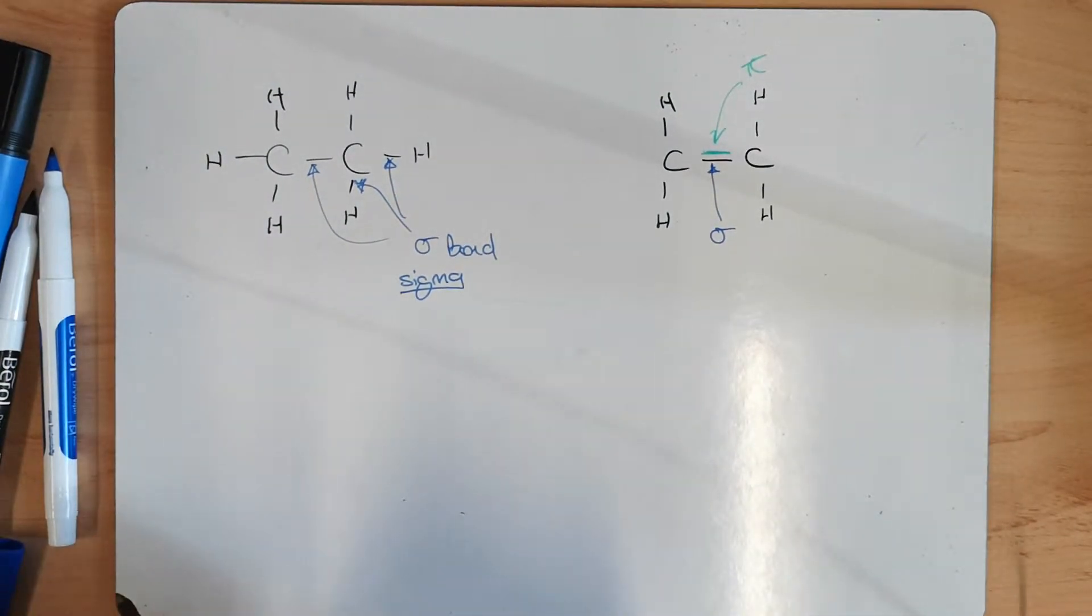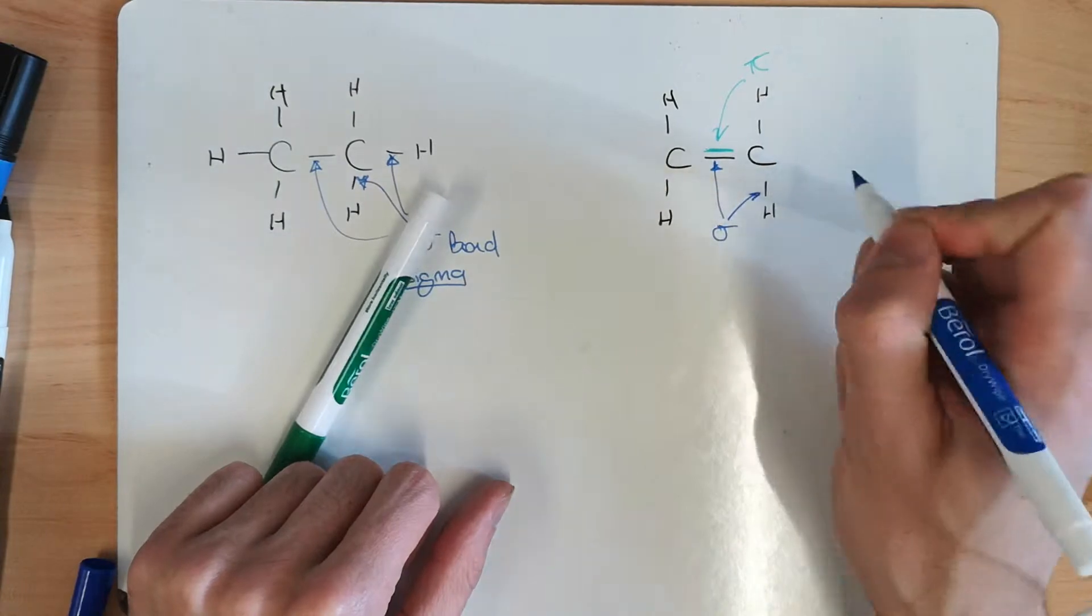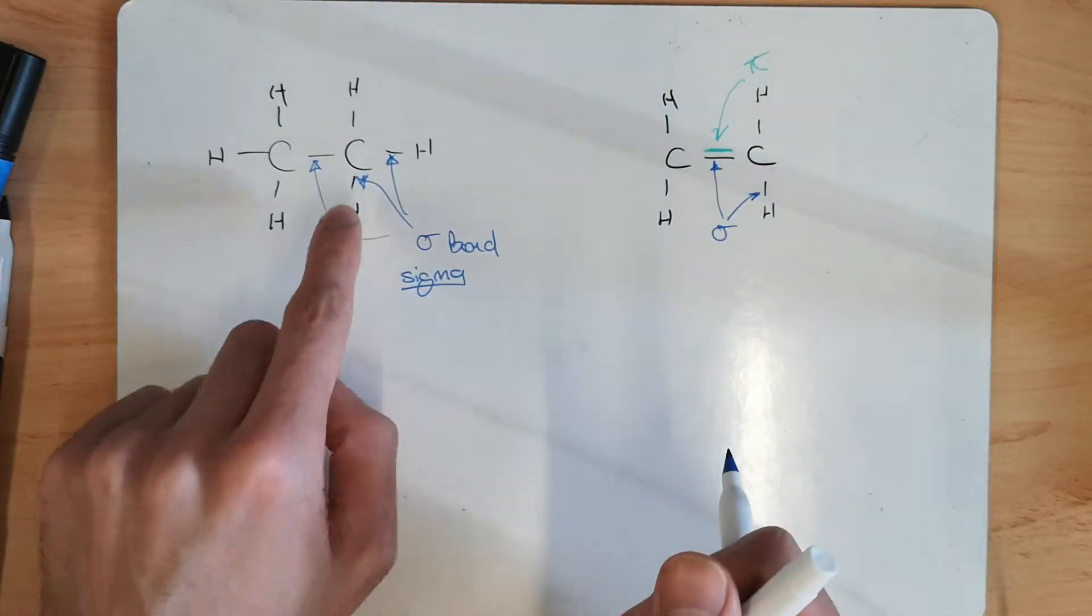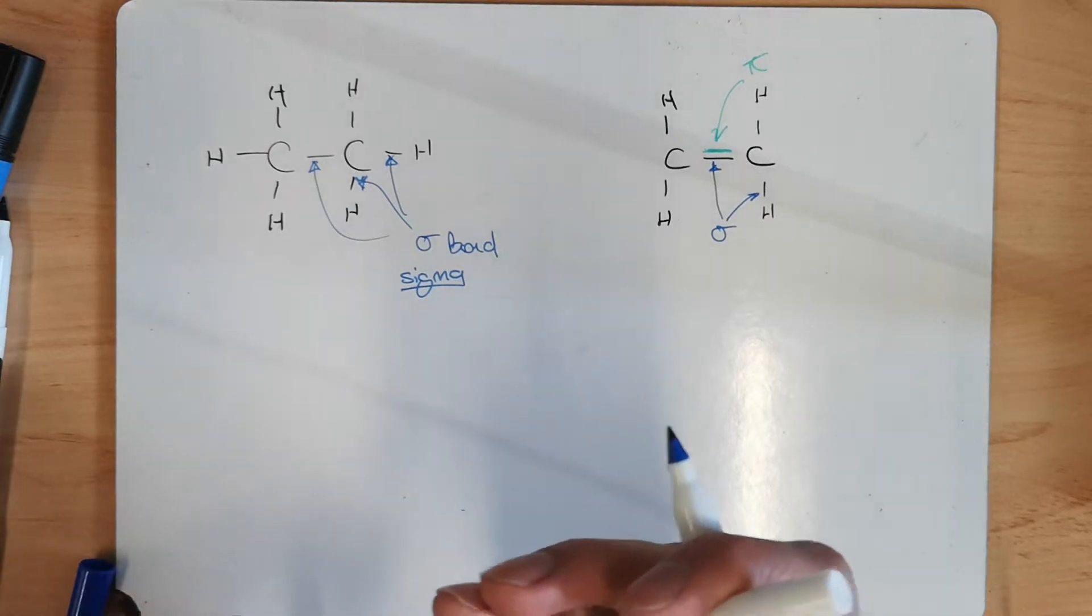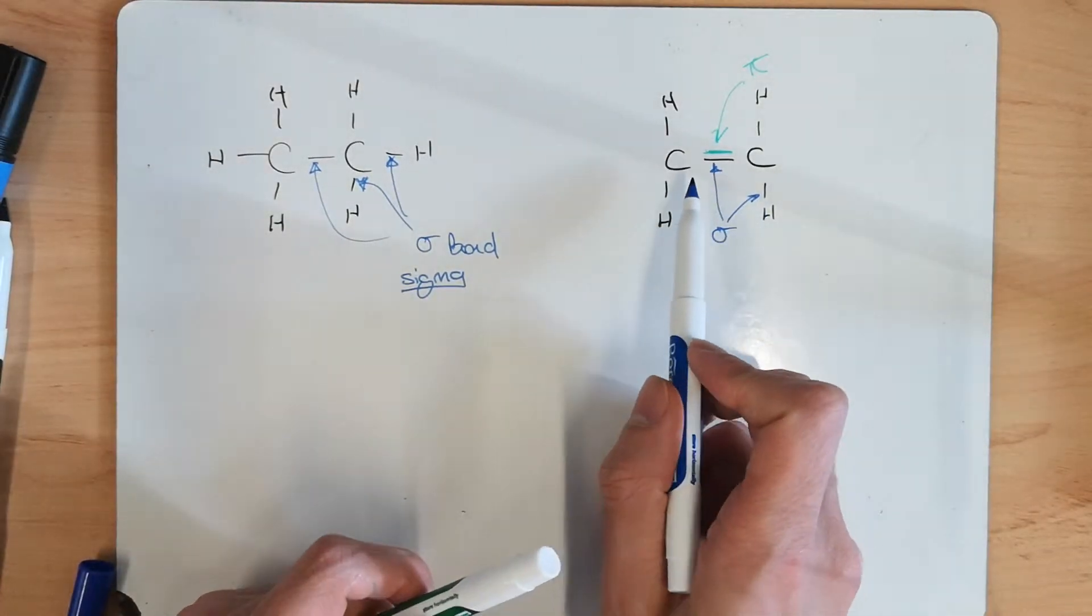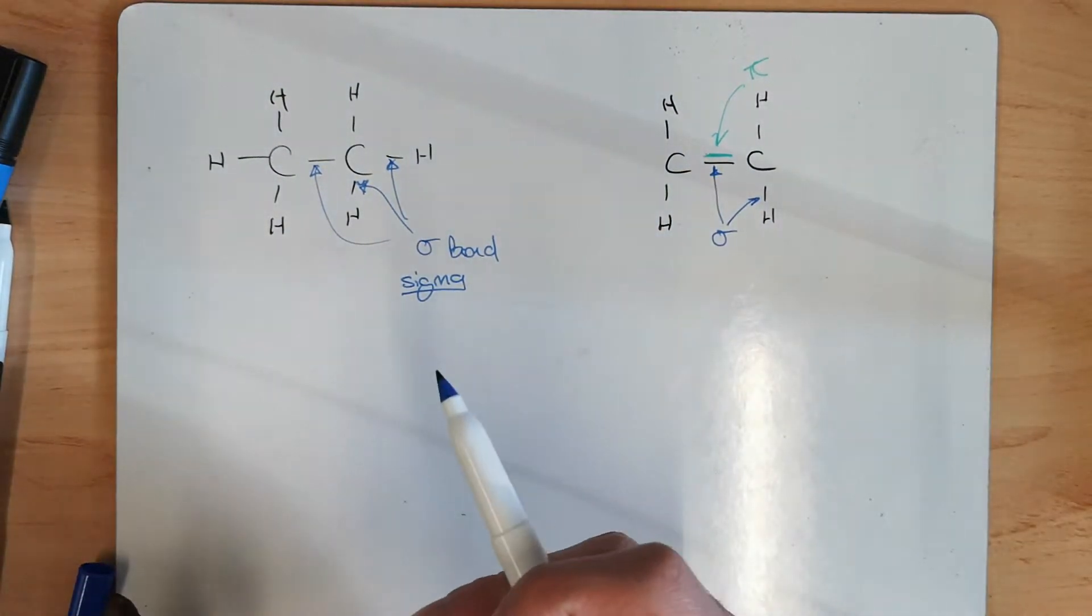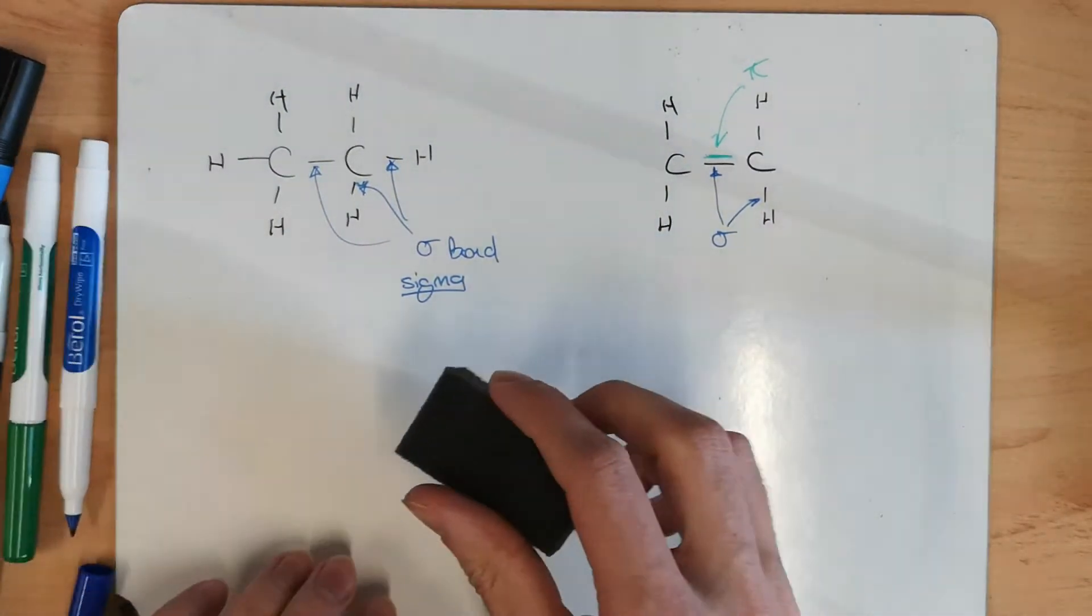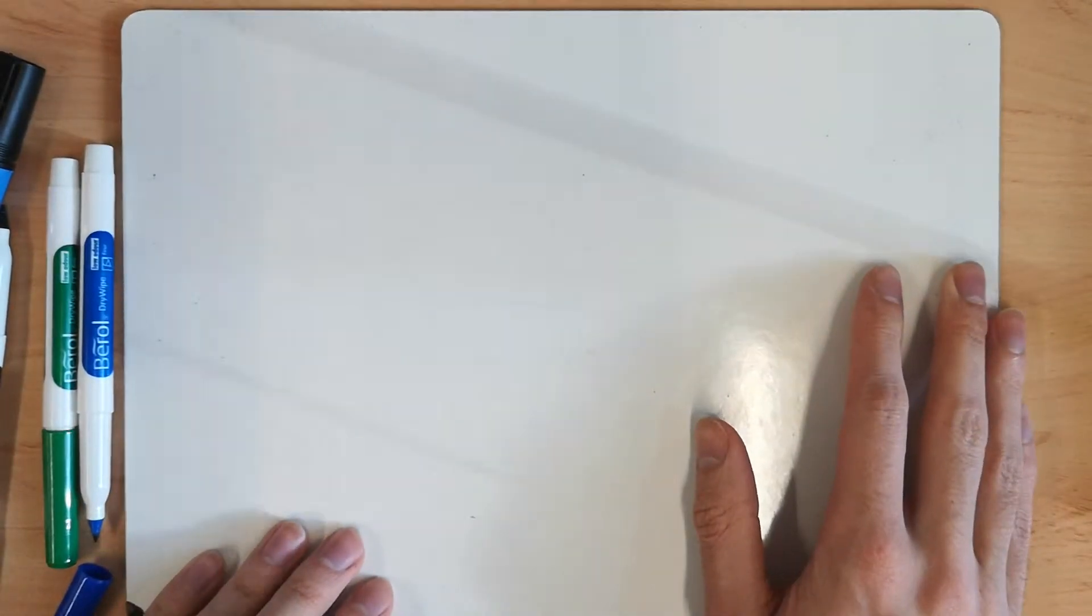So, in an alkene, we do have sigma bonds, and these bonds here, they're sigma bonds, the CHs. We've seen that there, CH bond is a sigma bond. The only difference is, when we get to the double bond, we've got a sigma bond and a pi bond. So, we need to know how that occurs, and there's a diagram I'm going to learn to draw here.